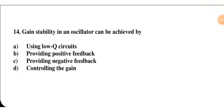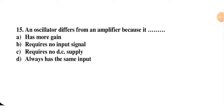Gain stability in an oscillator can be achieved by using — low Q circuit, providing positive feedback, providing negative feedback, or controlling the gain. Next: an oscillator differs from an amplifier because — it has more gain, requires no input signal, requires no DC supply, or always has the same input. The right option is 'requires no input signal' — an oscillator does not require any external input signal.